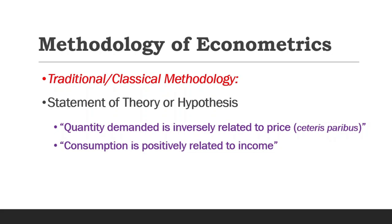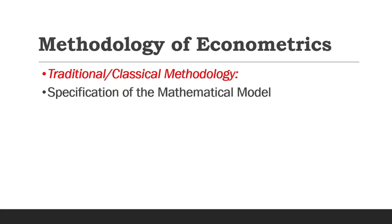So if we should take into consideration the second theory where consumption is positively related to income, then we transition to the next step of the methodology, which is specifying the mathematical model. So to specify the mathematical model for the consumption theory, it is of the form C equals A plus BY.